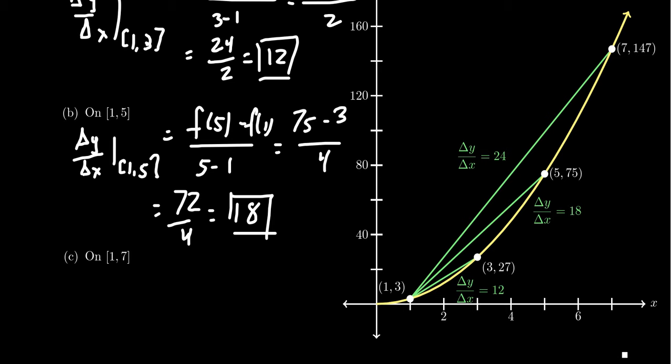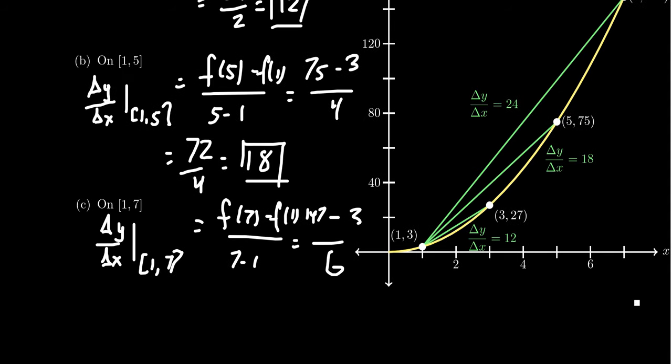And then if we do this one more time, the average rate of change from 1 to 7, delta y over delta x as you go from 1 to 7 right here. Same formula, you're going to get f(7) - f(1) over 7 - 1. 7 - 1 is 6. f(1) is 3. And if you plug 7 inside of the function, you're going to get 7², which is 49, times that by 3, you get 147. Taking away the 3, you're going to get 144 over 6, which then simplifies to be 24.